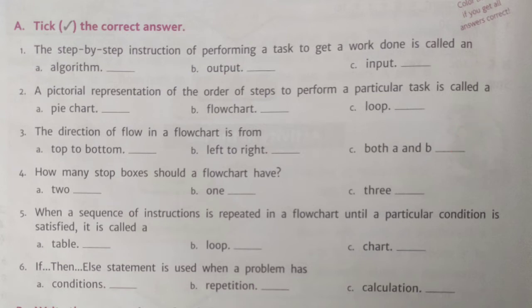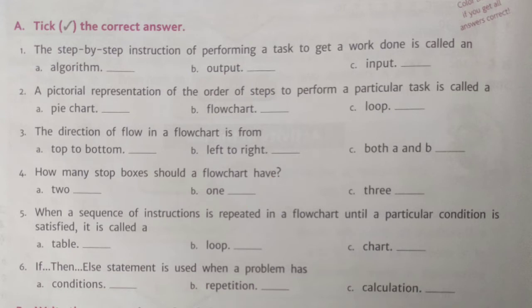Fourth question: how many stop boxes should a flowchart have? The options are 2, 1, and 3. The correct answer is option B, 1. For every flowchart we should have only one start and stop box. So we can tick on option B, 1.